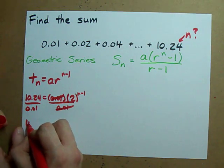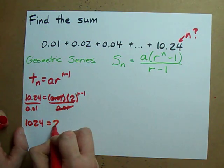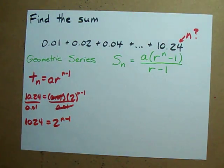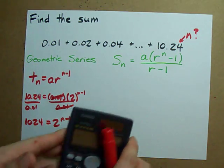When I divide that I get 1024. And then I either have to guess and check or use a special little log trick.